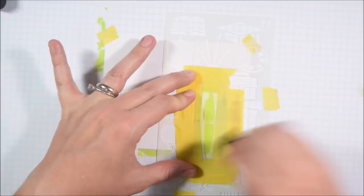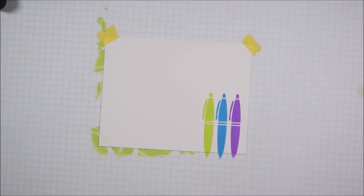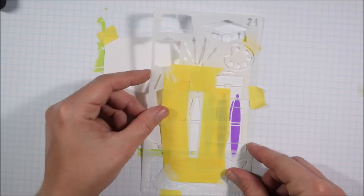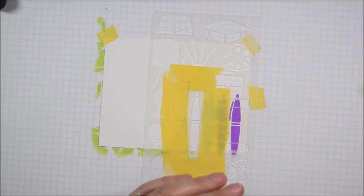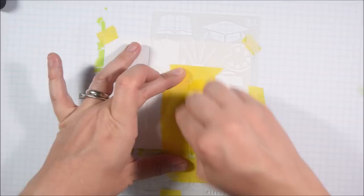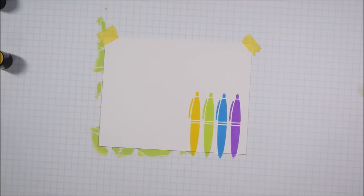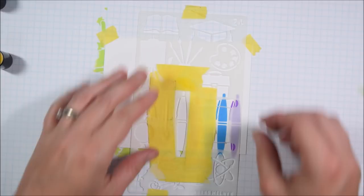So the distress oxide inks that I'm using to create my rainbow here are twisted citron, wilted violet, salty ocean, picked raspberry, mustard seed, and carved pumpkin and I'll just switch through those in color order, rainbow color order. I thought about using a red in my rainbow but for some reason it just never appeals to me as much as a pink in a rainbow. I know there's other people who tend to leave the purple off a lot even in a rainbow so I think there's all these versions and personal preferences about what makes a rainbow but anyway I want my pens to line up perfectly.